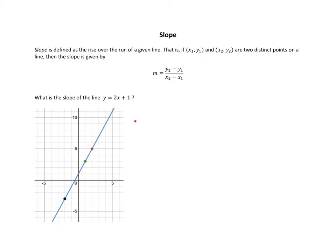Down here, I have the line y is equal to 2x plus 1, and I've labeled a few points on it. This idea of slope being the rise over run — I'll write m for slope and put rise over run — means if you pick a point, the rise is how far you go up, and the run is how far you go over. The rise from here to here is 2, and the run is 1. So for this line, the slope is 2 over 1, or simply 2.